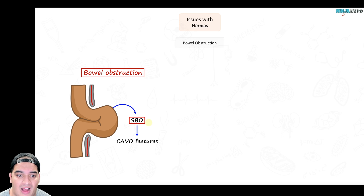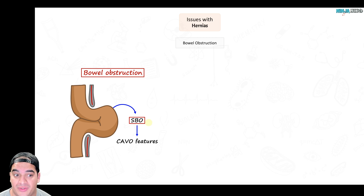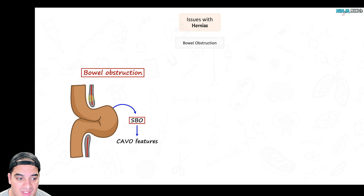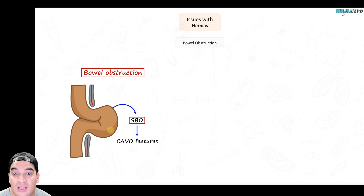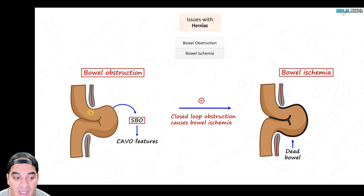This can cause a small bowel obstruction, which presents with the CAVO features: cramping abdominal pain, abdominal distension, vomiting, and obstipation. If a patient comes in with a visible inguinal or femoral mass and these features, think that they've gone from a simple hernia to a closed loop obstruction — compressing the bowel at both a proximal and distal point with no way out.